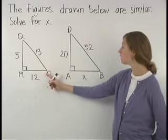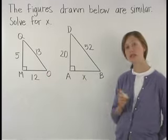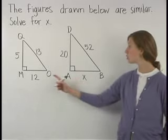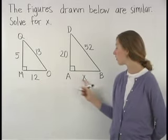First, notice that MO corresponds to AB, so we have the ratio 12 over X.